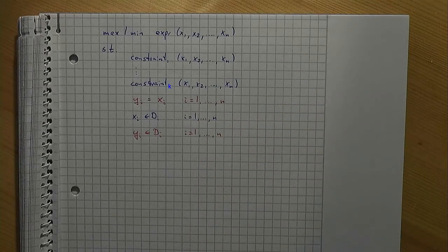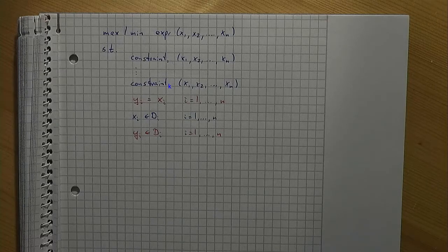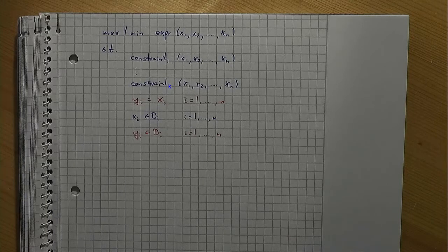At this point, the y variables have no function at all and the purpose of them is not obvious yet. The core idea is that you can freely rename the variables and the constraints. It makes no difference whether you use the name x or y. And that is what we do: select some, not all, of the constraints and rename the decision variables.